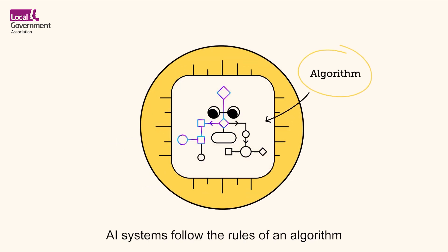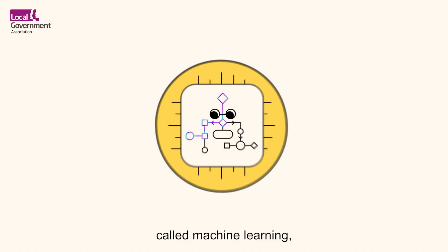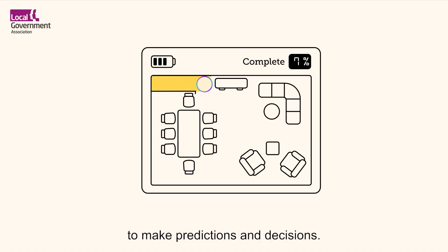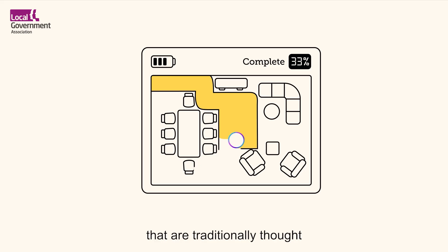AI systems follow the rules of an algorithm, or a method of data analysis called machine learning, to make predictions and decisions. These systems are often used to do tasks that are traditionally thought of as requiring humans.